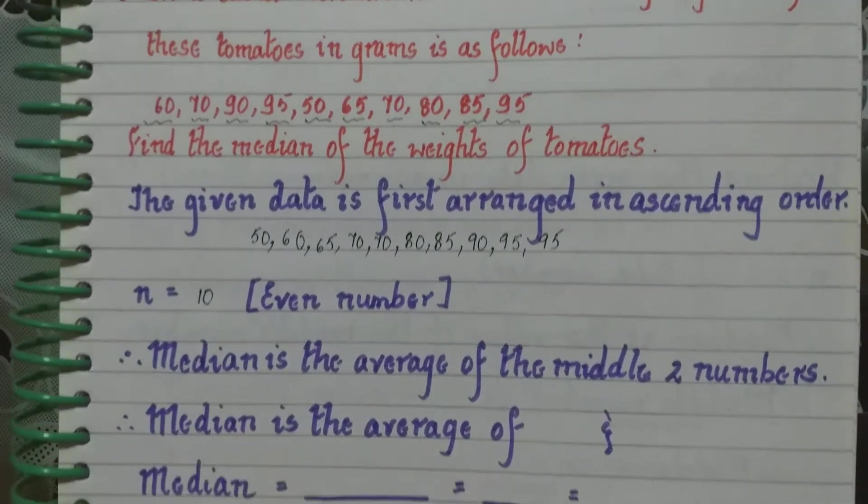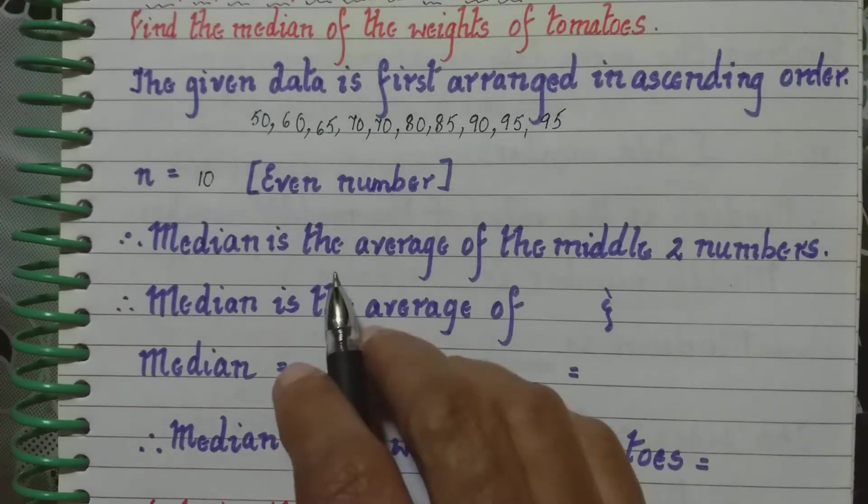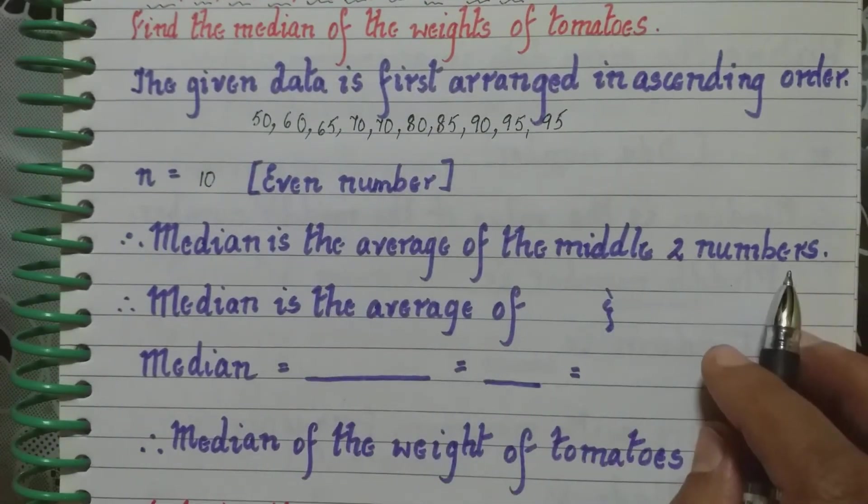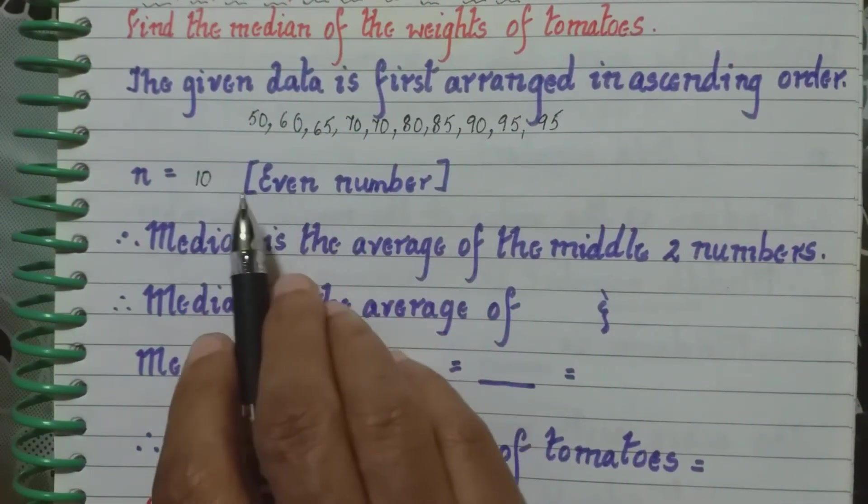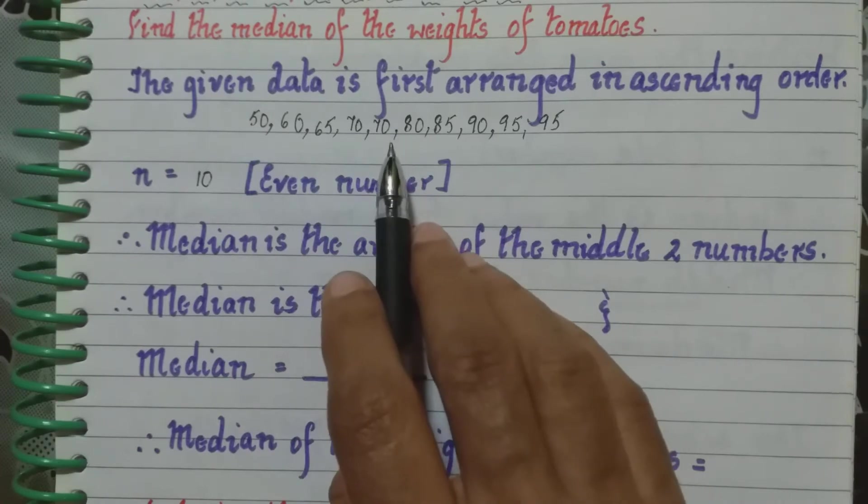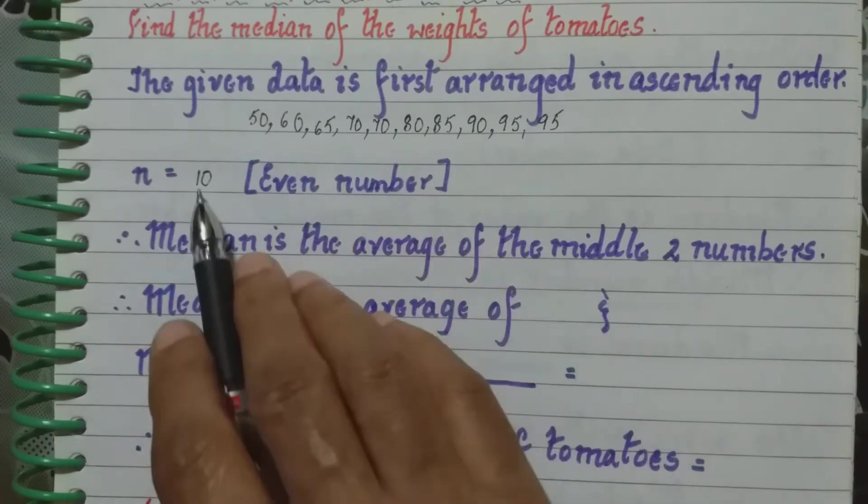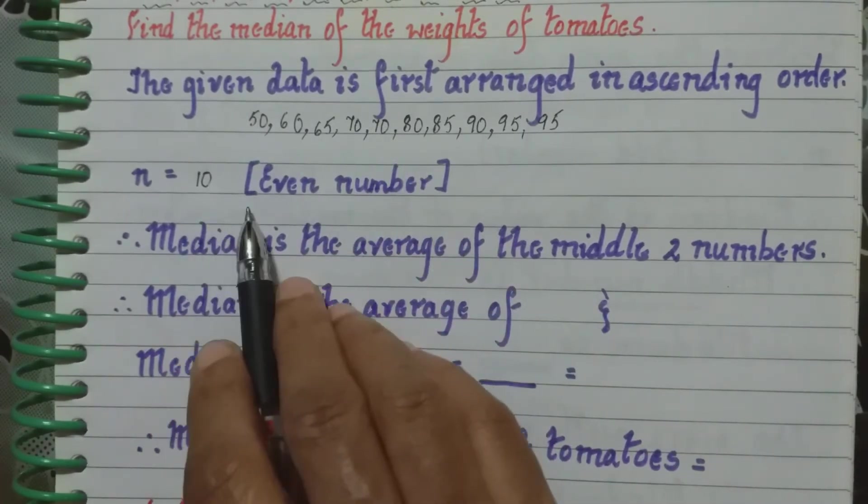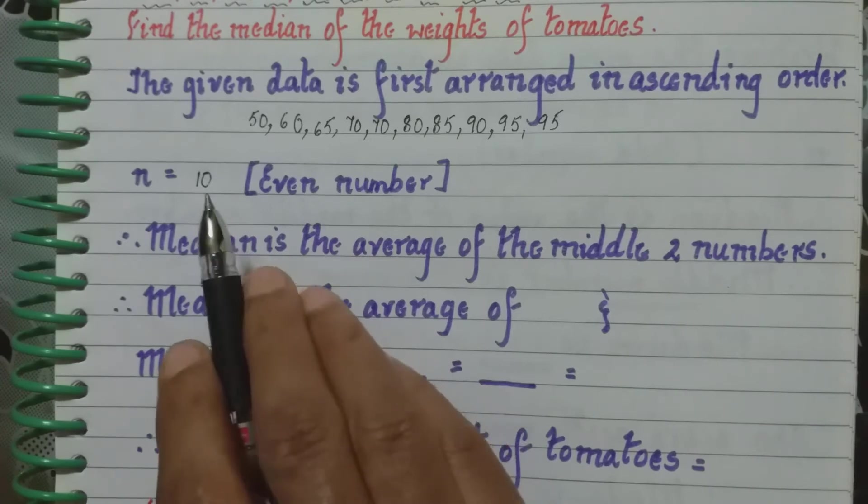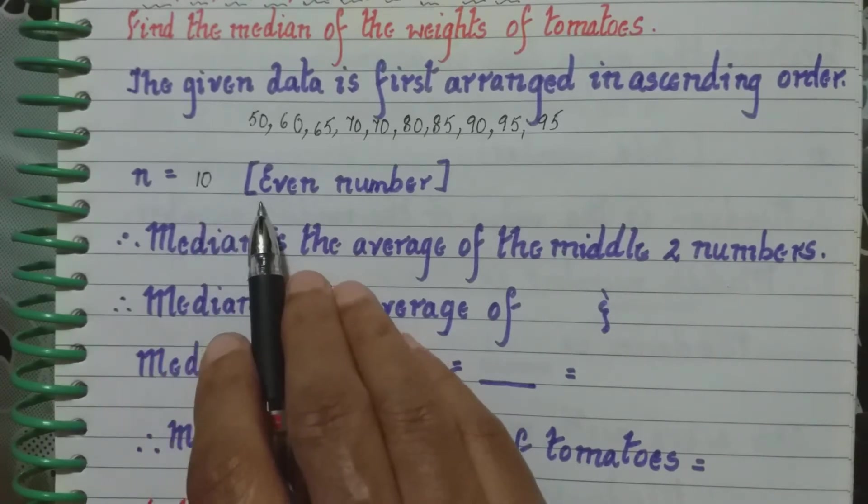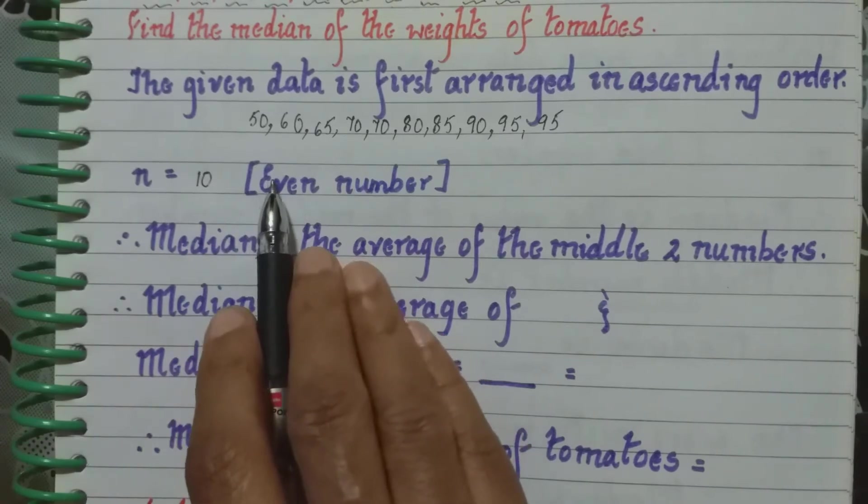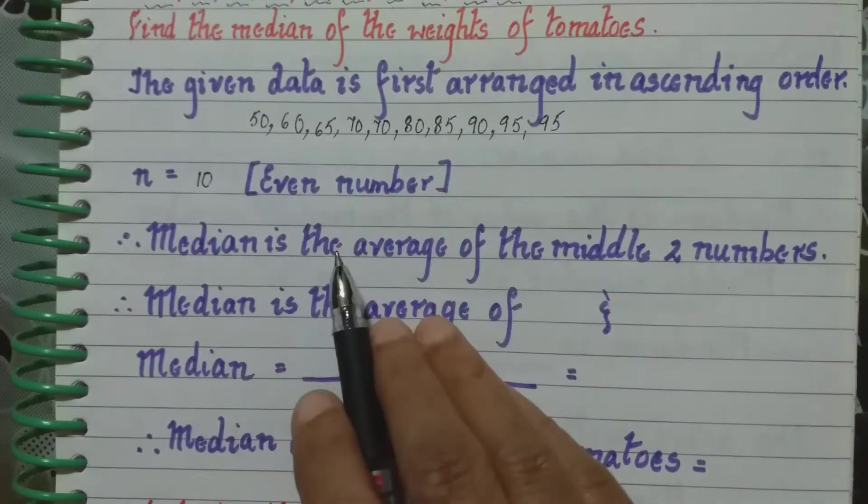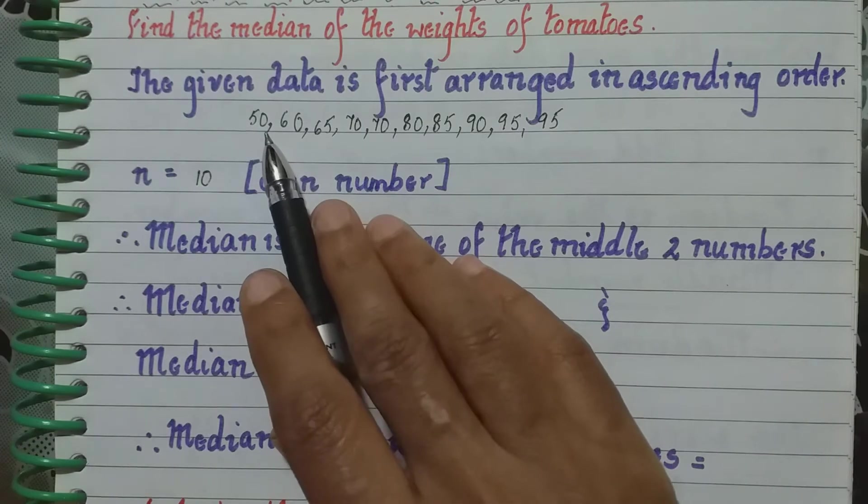So the way to find the median is different. It is the average of the middle two numbers. So which will be the middle two numbers? It will be the fifth and the sixth number. If it is 10, we divide by 2. So we get 5, the fifth number and the sixth number. Whichever observation we get, that one plus the next one, divide by 2.